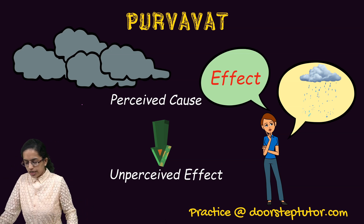Moving on to Sesavat, also known as Karirat Karan Anuman. Here, there is a perceived effect, but you are trying to relate it to an unperceived cause. The thing that has happened you are visualizing, but what was the cause behind it you do not know. A simple example: you see a city flooding — that is a perceived effect. But you are developing an unperceived cause: you do not know whether rainfall had occurred, yet you say that because of heavy rainfall the city is flooding. That unperceived cause makes it Sesavat.